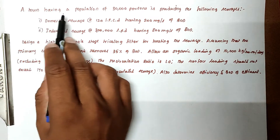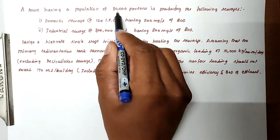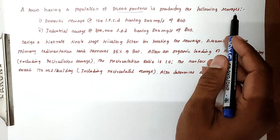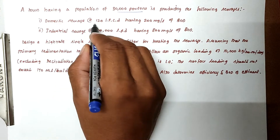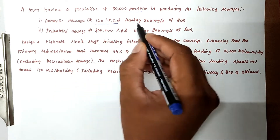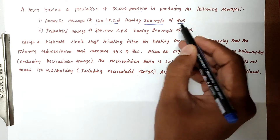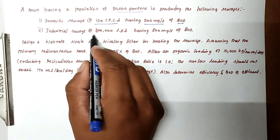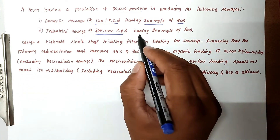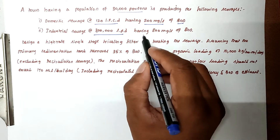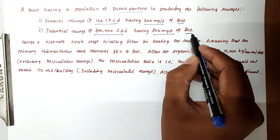The problem is: a town having a population of 30,000 persons is producing the following sewage. First, domestic sewage at 120 Lpcd having 200 mg per liter of BOD. Second, industrial sewage of 3 lakh liters per day having 800 mg per liter of BOD.